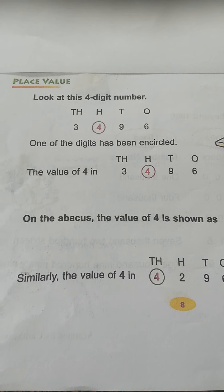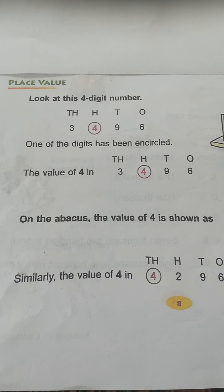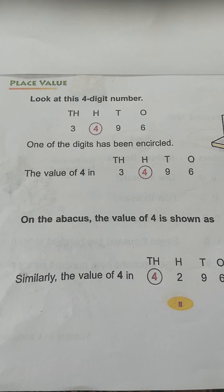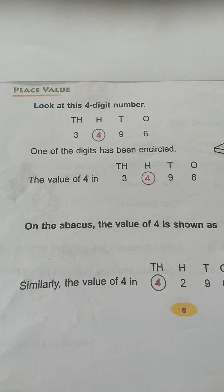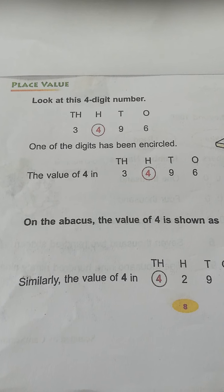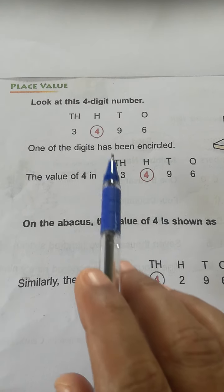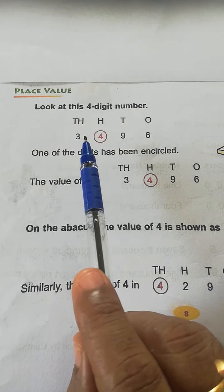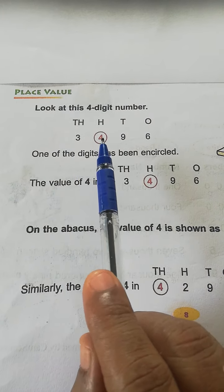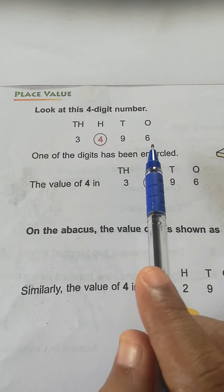Good morning children. Today I want to explain the place value from chapter 1, video number 5. Here, a 4-digit number is given: 3, 4, 9, 6.